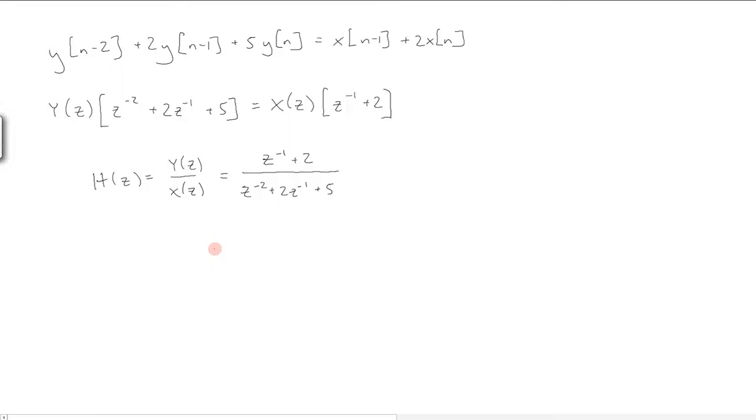We can rewrite this in the form we want. And finally, in pole-zero notation, we can write it as follows. Here we see we have one zero at negative one-half and another at zero, and two complex conjugate poles.